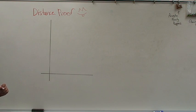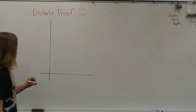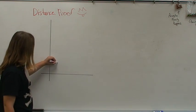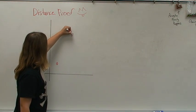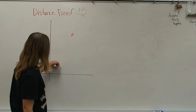This is the proof for the distance formula. To start our proof, we start with two general points: x1, y1, and x2, y2. The first point will be x1, y1; the second point will be x2, y2.